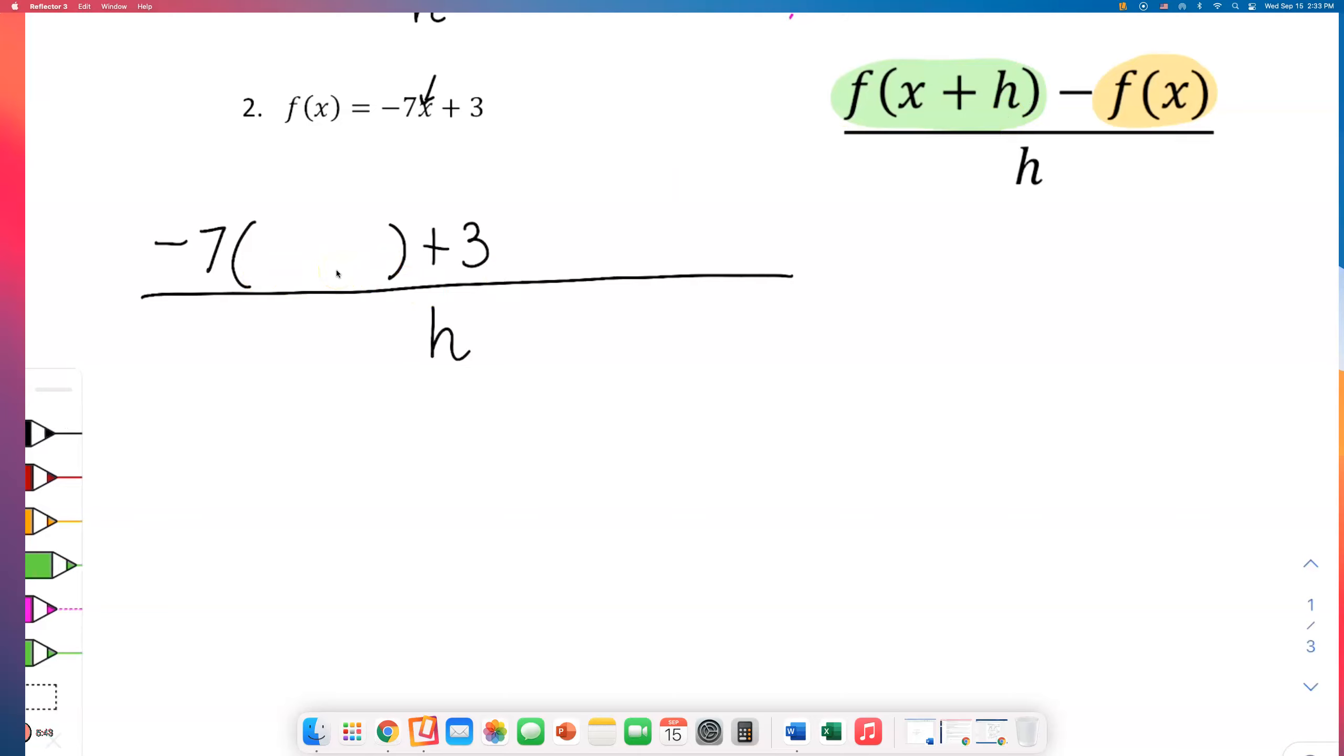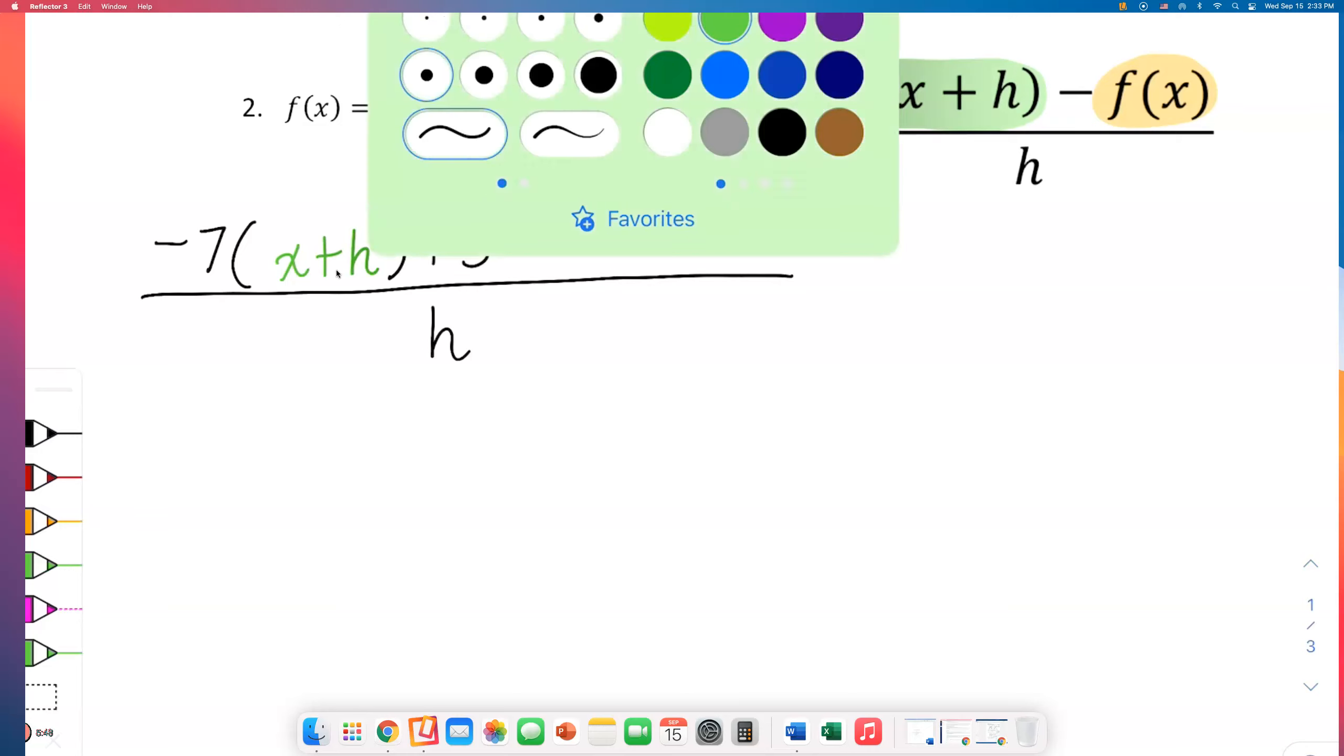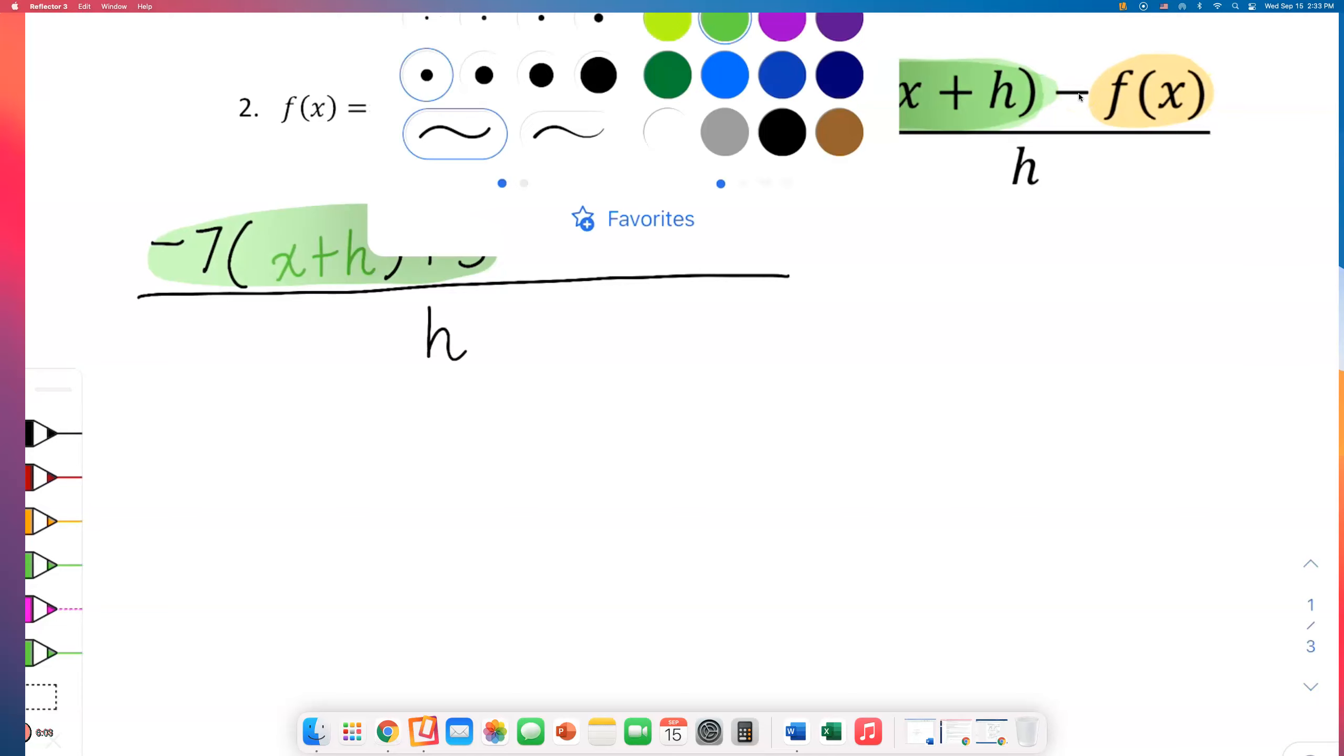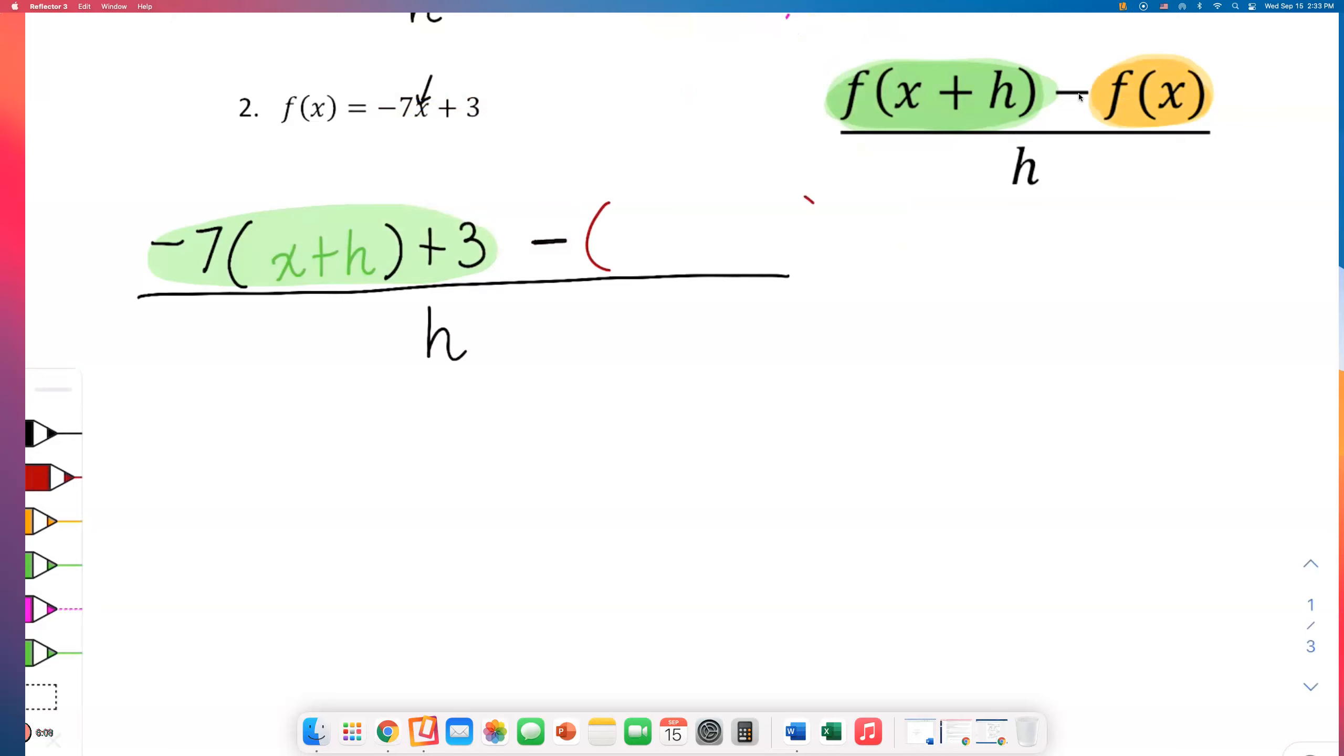Now I need to follow the rest of the formula - do the minus sign, and then I need to do the second part. I need to subtract f of x. What is f of x? f of x is negative 7x plus 3. Put that f of x in another parenthesis so that you can distribute that minus sign that you will always have in front of the f of x.